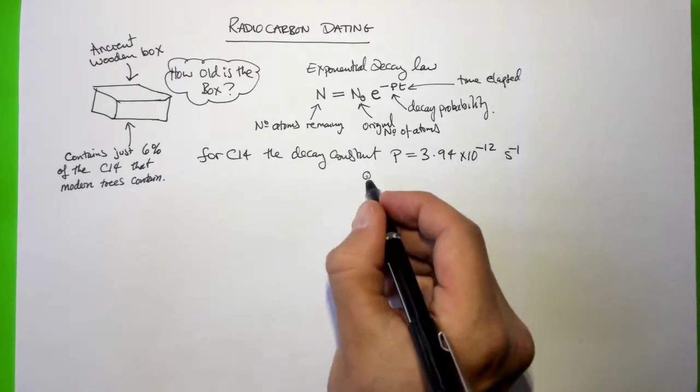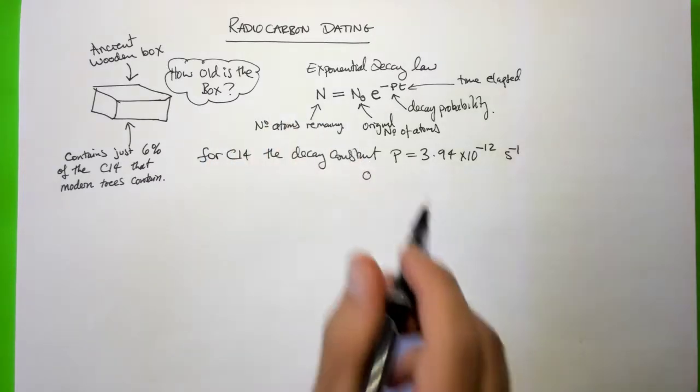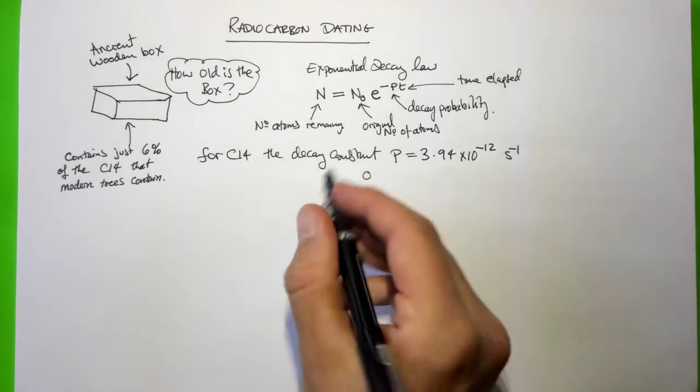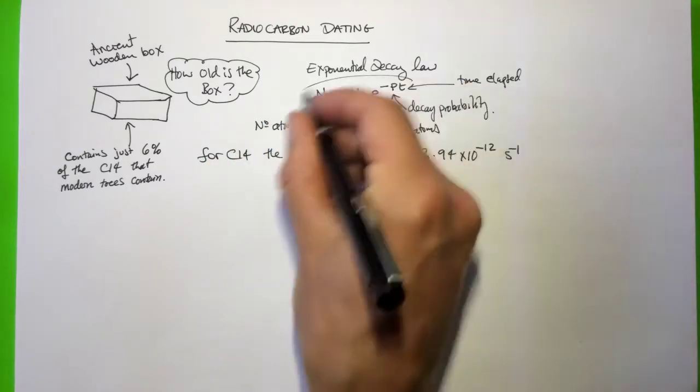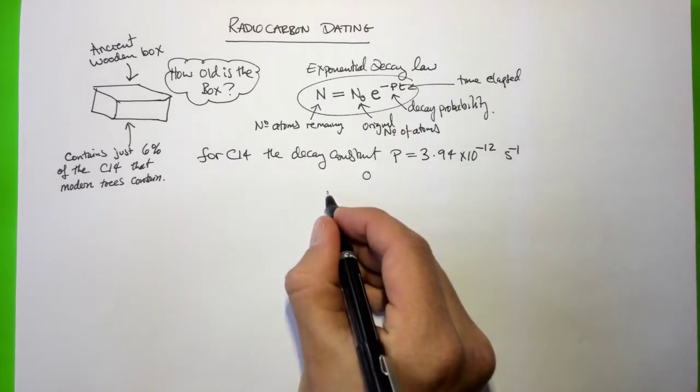This, on the other hand, means that carbon-14 has a long half-life, so it sticks around a long time, which makes it useful for this kind of dating method. So let's try and solve the problem. We'll take the equation from up here and try and rearrange it to make Pt the subject of the formula.